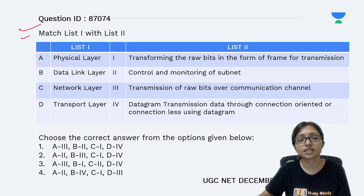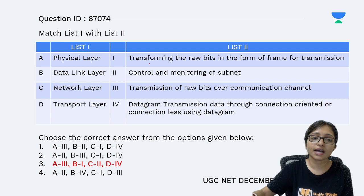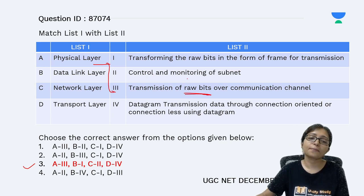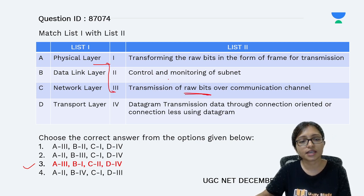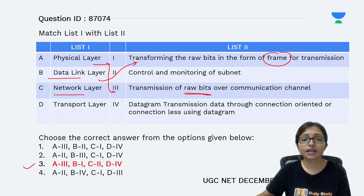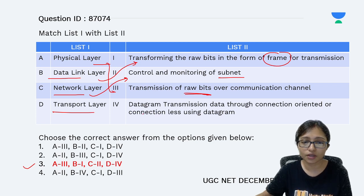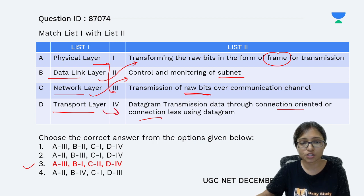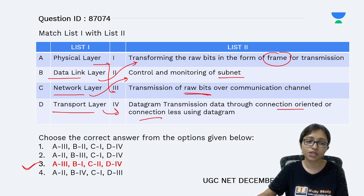The next question was about the physical, data link, network, and transport layers. The answer is option 3. The physical layer transmits raw bits — raw bit is the main part. The data link layer works on frames. The network layer works on subnetting. The transport layer works on datagram transmission and connection-oriented and connectionless communication. So the answer is option 3.